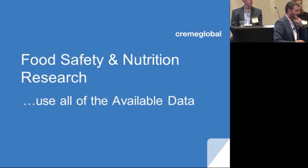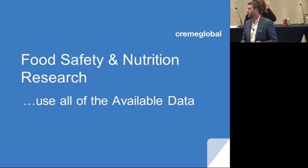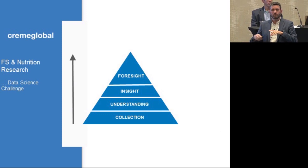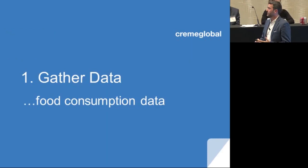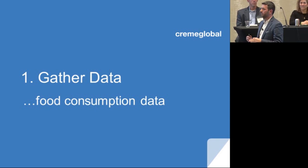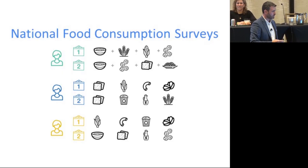In a data science challenge, we like to use as much of the available data as we can. Going back to our triangle — gathering data, structuring data, analyzing, visualizing data, and predictive modeling — I'll walk through a few examples of how that can be done in the food safety and nutrition space. In terms of gathering data, there's a lot of food consumption data out there already. It's ready to go, ready to use, and most of it's publicly available. You can just access it, organize it, and start using it.